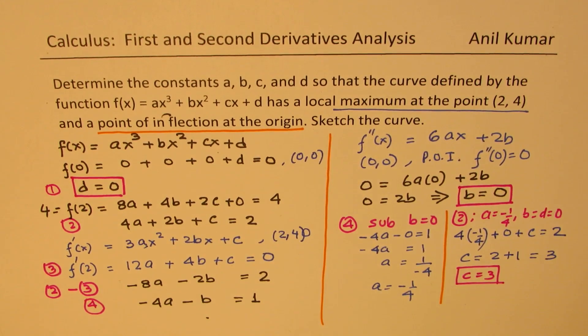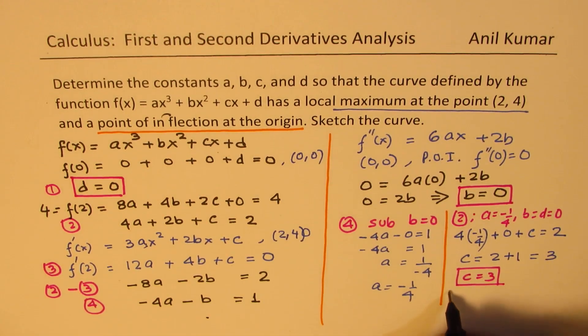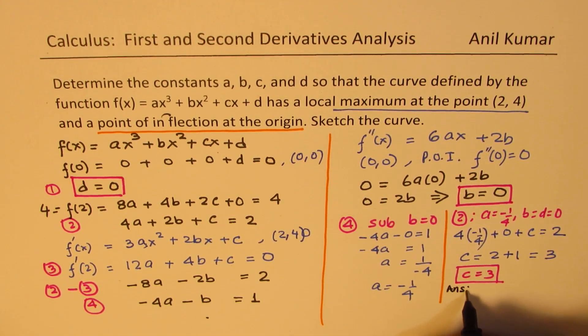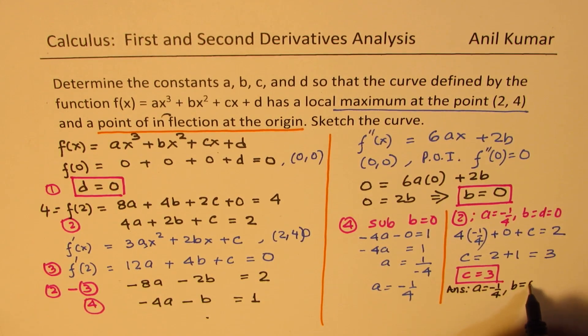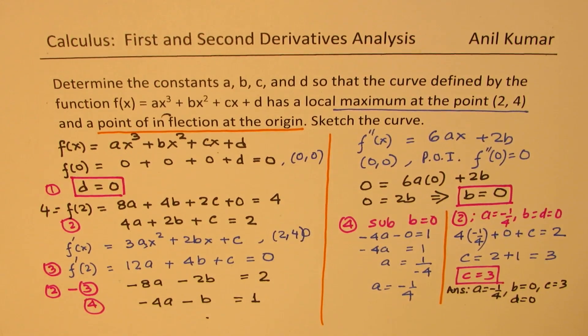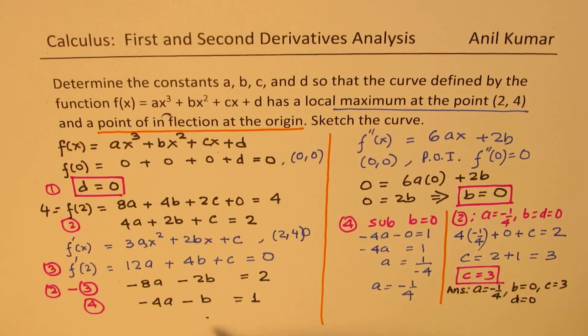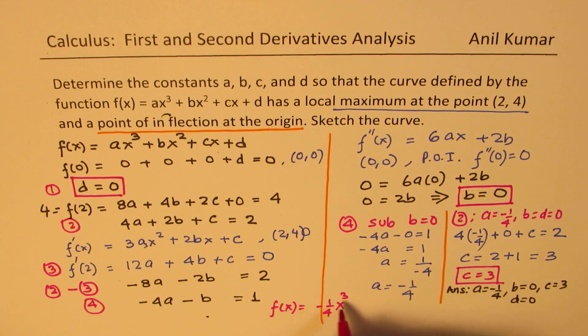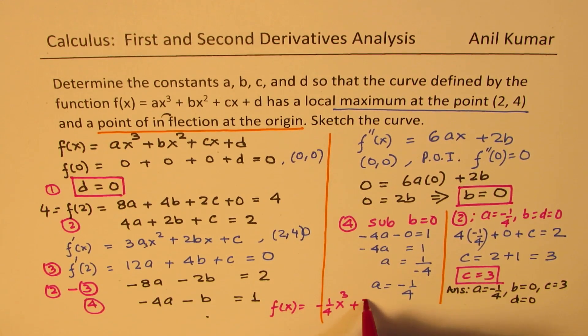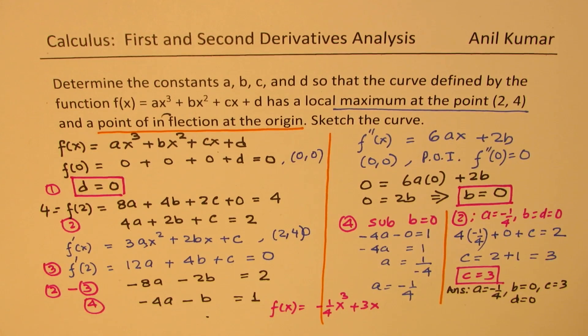So here we have the answer a, b, c, and d. We can now write our answer as a = -1/4, b = 0, c = 3, and we have d = 0. So that is how we can answer this question. So the equation finally becomes f(x) = -1/4 x³ + 3x. So that becomes the equation from the given conditions. I hope that makes sense.